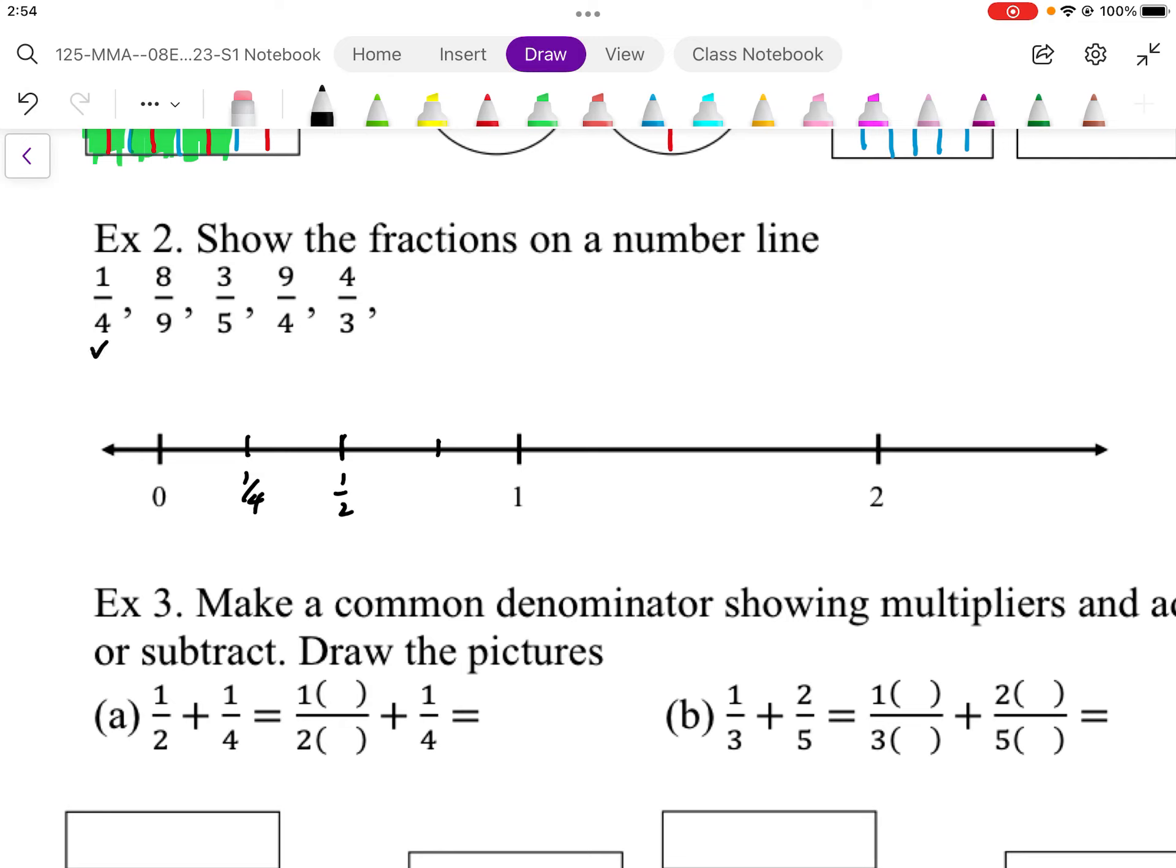I'm going to move to 3 fifths. 3 fifths is going to be somewhere about 60%. So if I do 3 divided by 5, I get 0.6. 0.6 would probably be somewhere about here on the number line. So this is going to be our 3 over 5. And again, we're just estimating about where that is.